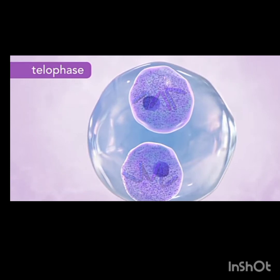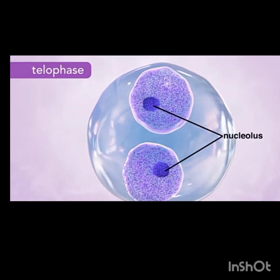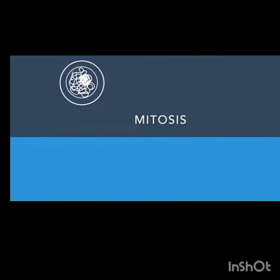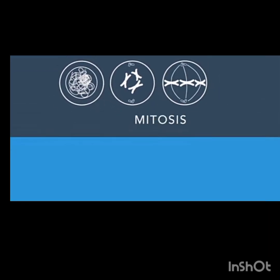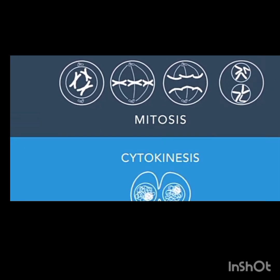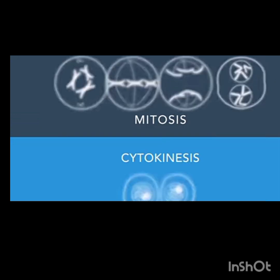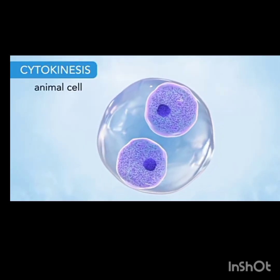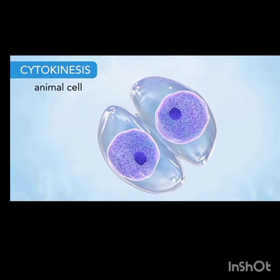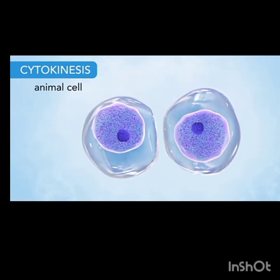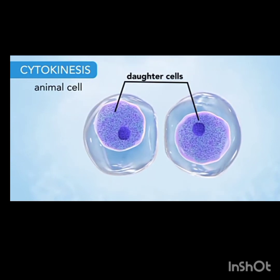In telophase, the nuclear membrane is again formed around the chromosomes on either side. The chromosomes spread out into chromatin and the nucleus becomes visible again. Then cytokinesis occurs — the cytoplasm divides as the cell membrane pinches inward and splits the cell into two daughter cells.